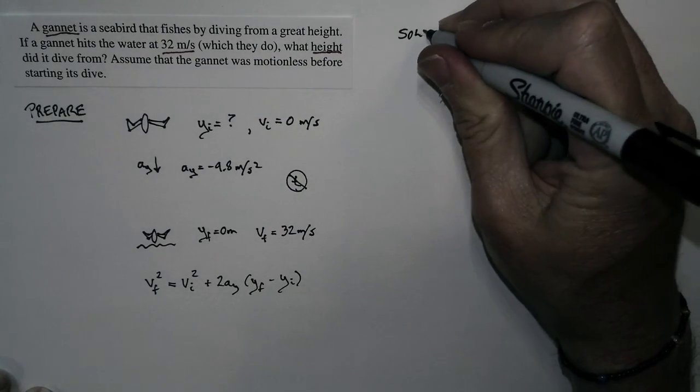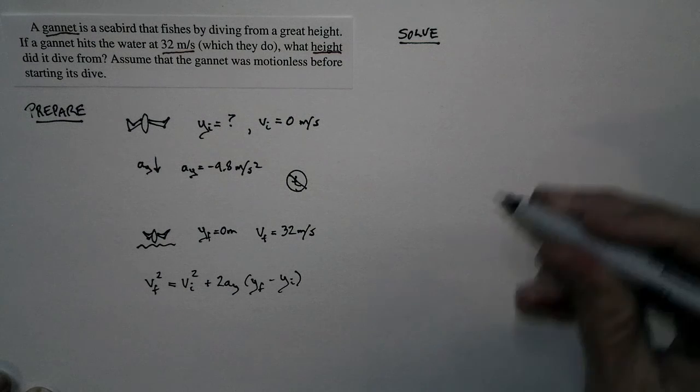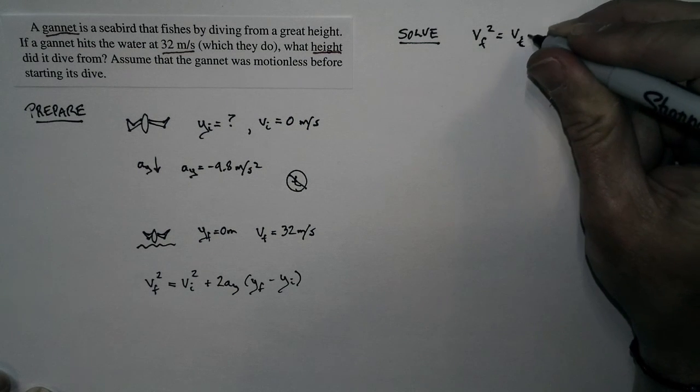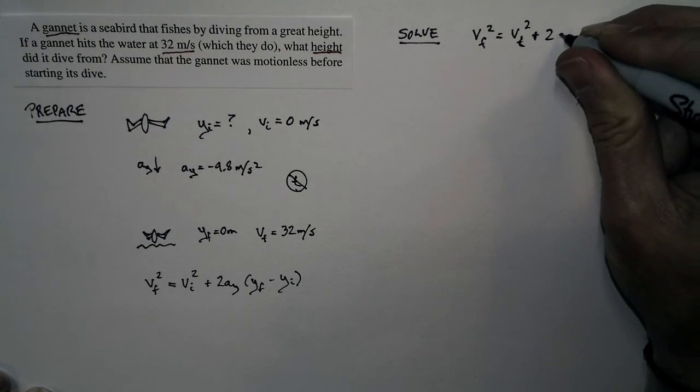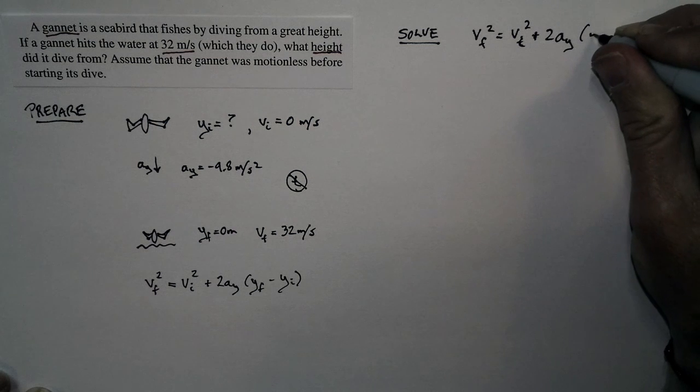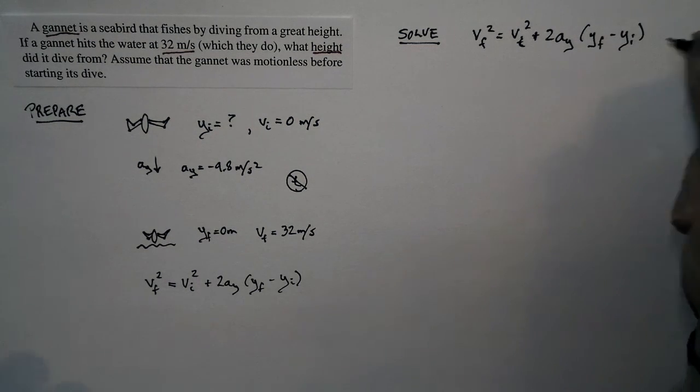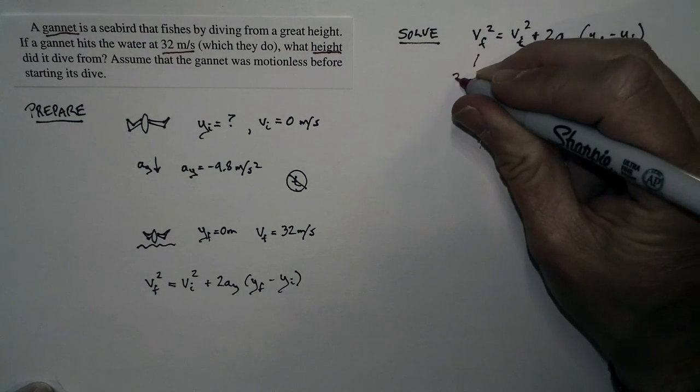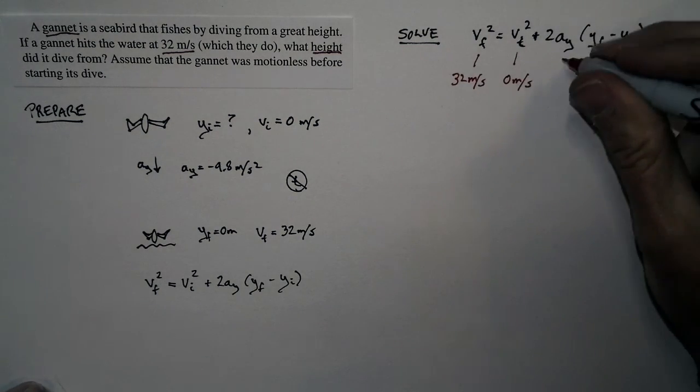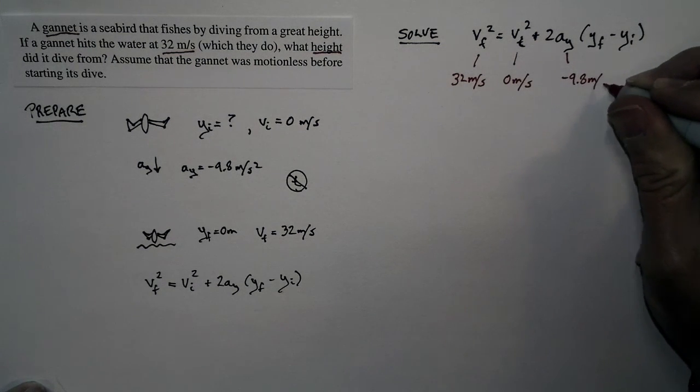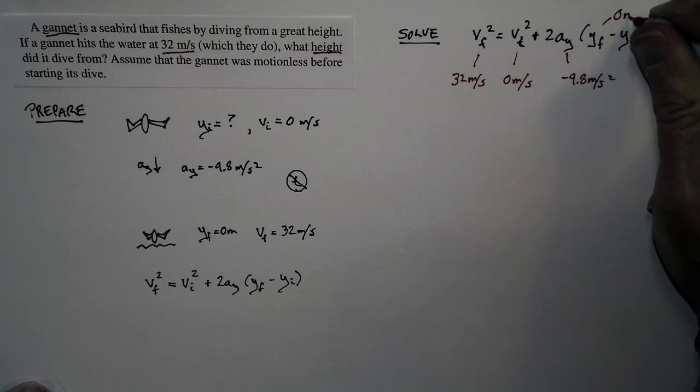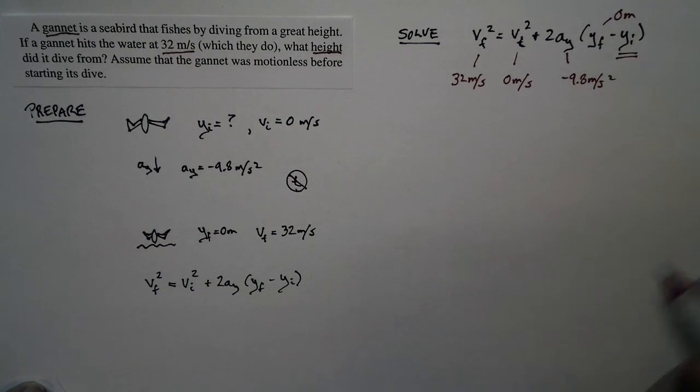Let's go ahead and rewrite our relationship here. Vf squared is equal to vi squared plus 2 times the y acceleration times the final y position minus the initial y position. And we know these values. The initial speed is just 0 meters per second. The final speed is 32 meters per second. The acceleration is negative 9.8 meters per second squared. The final position is 0 meters. What we're looking for is the initial position.